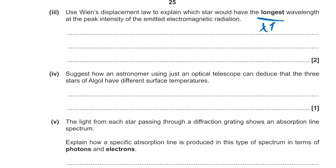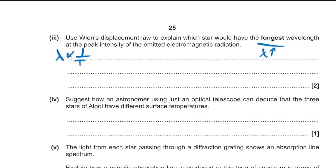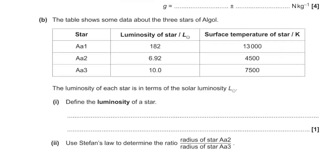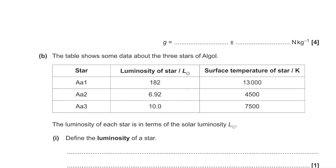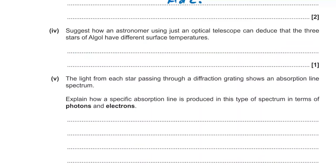Use Wien's law to explain which star has the longest wavelength. Wien's law states peak wavelength is inversely proportional to temperature. The lowest temperature star will have the longest peak wavelength — that is AA2.